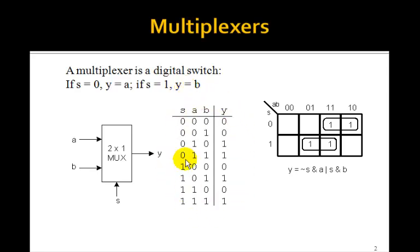So we can make this truth table where here's s equals 0, so y is the same as a. Here s is equal to 1, and so y is the same as b. There are four 1's in the output, so we can make a Karnaugh map, shown here.